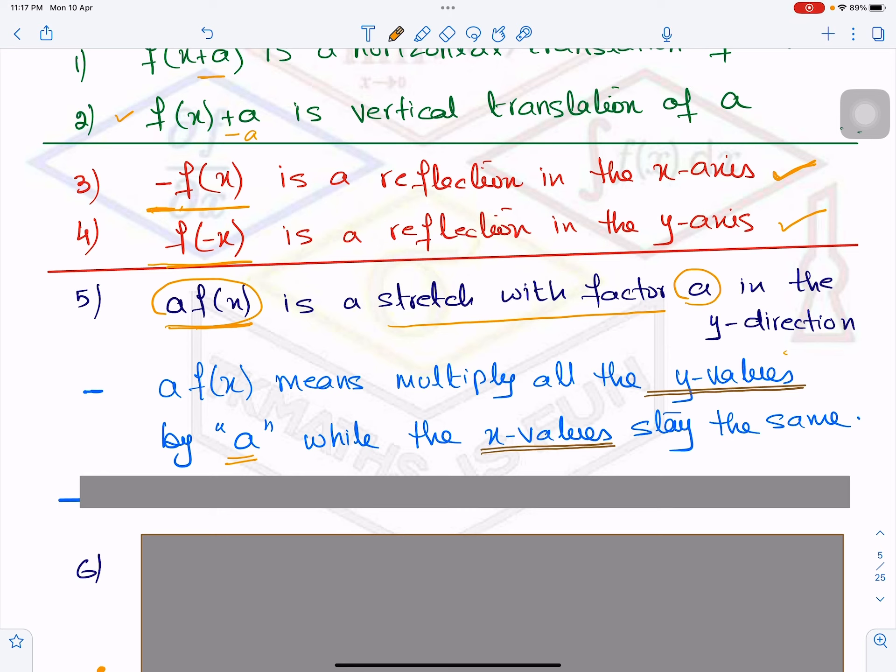Now, what do you do in that case? If the graph f(x) is given to you, then the main points of the function f(x), you just multiply all the y values by the constant a and keep the x values as it is. You will get new points and you will plot them.